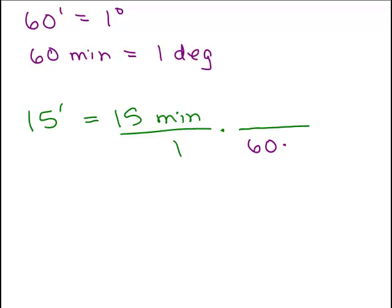So if I put the minutes in the denominator and 1 degree in the numerator, this right here represents the number 1, right? Because these are two equal parts. They mean the same thing. 1 degree is the same as 60 minutes. Okay, so that's like multiplying by 1.